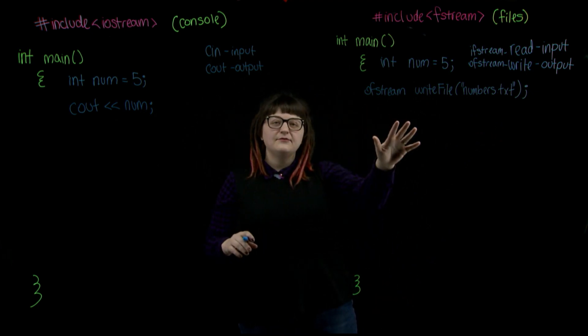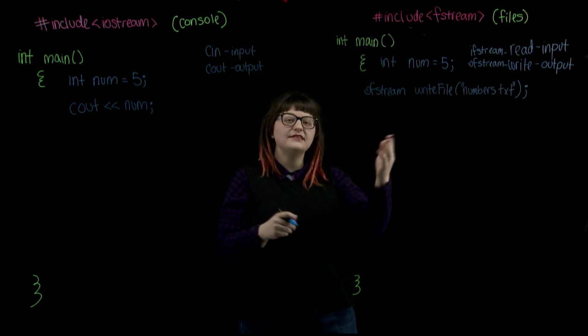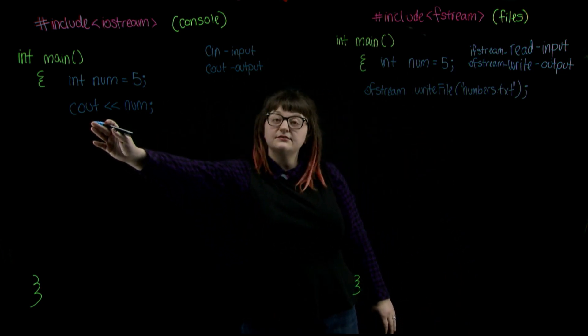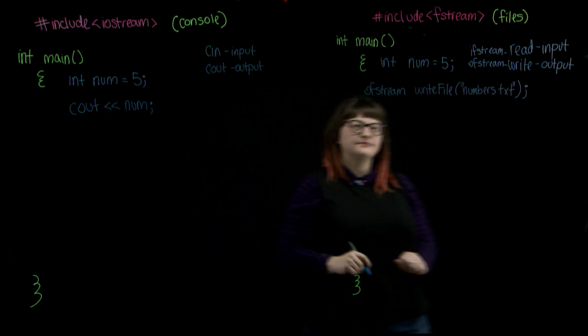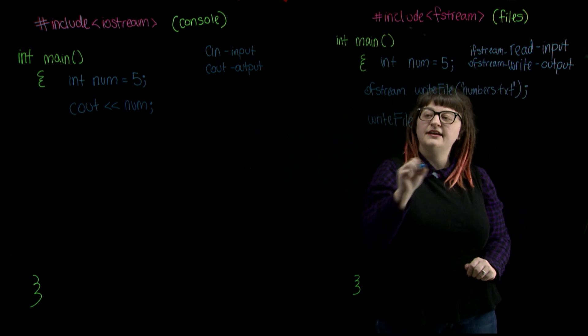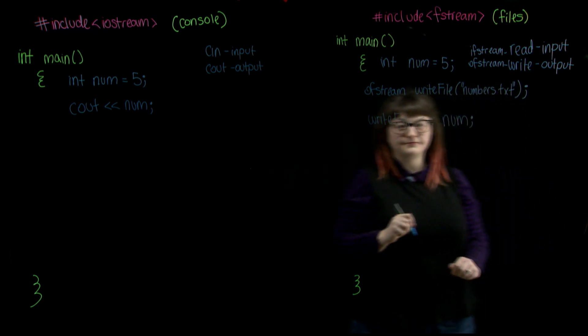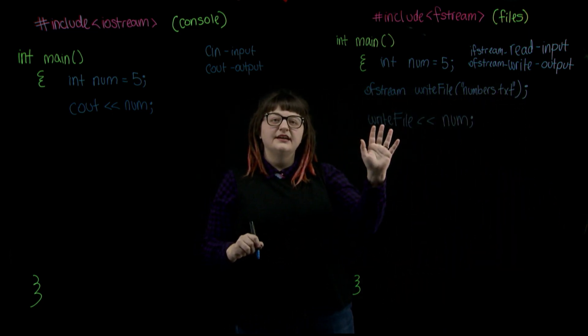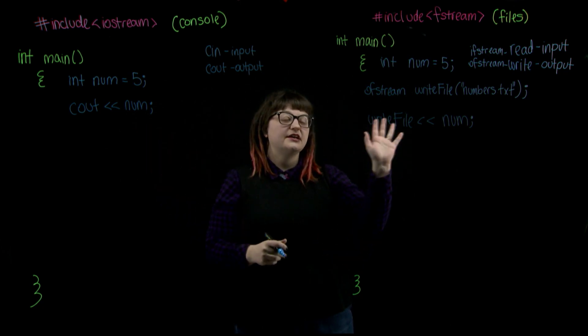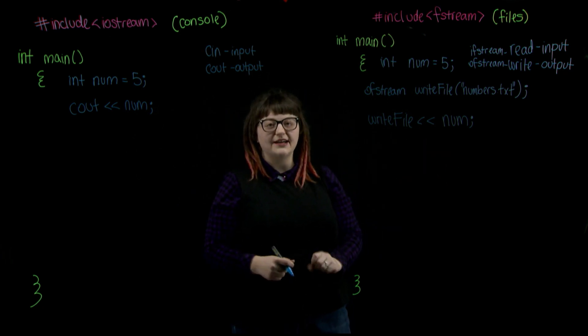But okay, now that we've got our file object declared, named, and given a parameter, we can begin to use it in our code. To write the value of num to our file as an output, we're going to do it just like cout, but instead of our console command, we're just going to replace it with our file object. And then our output carets. If we ran the console version of our program, it's going to display the value of 5 to our console. If we run our file version of the program and then we went and opened up numbers.txt, we would see num's value of 5 in the text file.